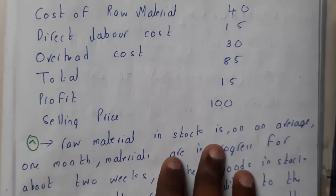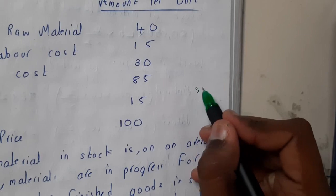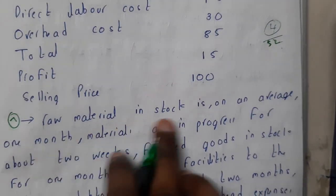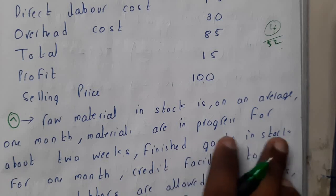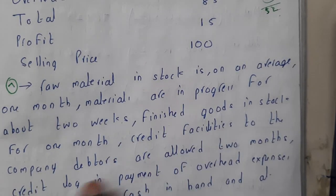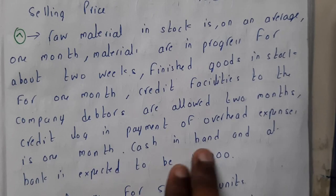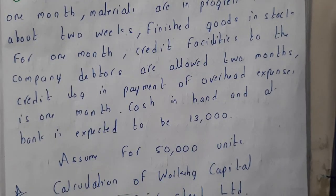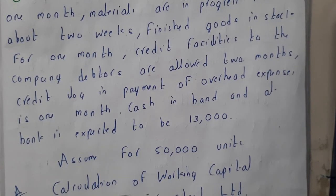Raw material is in stock on average for one month. We'll convert all time periods into weeks — one year has 52 weeks, so every month equals 4 weeks. Raw materials in stock: 4 by 52 into 40. Materials in progress: 2 weeks, so 2 by 52. Finished goods in stock: one month, so 4 by 52. Debtors are allowed two months, credit lag on overhead is one month. Cash in hand is 13,000. Number of units to assume is 50,000.